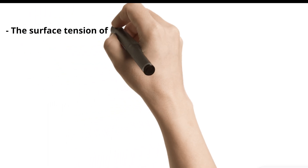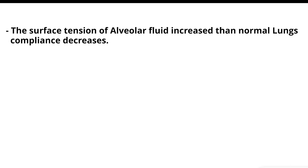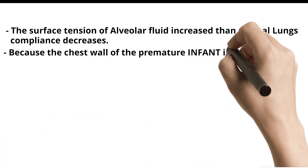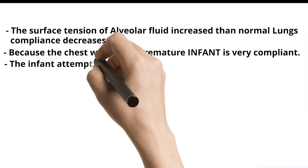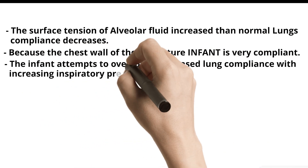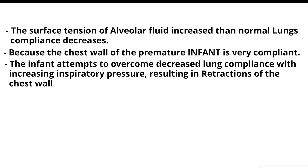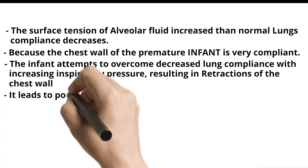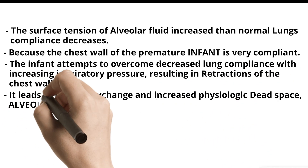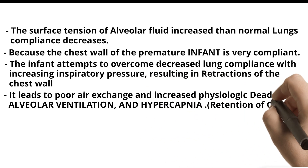The surface tension of alveolar fluid increases, and lung compliance decreases. Because the chest wall of the premature infant is very compliant, the infant attempts to overcome decreased lung compliance with increasing inspiratory pressure, resulting in retractions of the chest wall. This leads to poor air exchange and increased physiologic dead space, reduced alveolar ventilation, and hypercapnia — retention of carbon dioxide in the body.